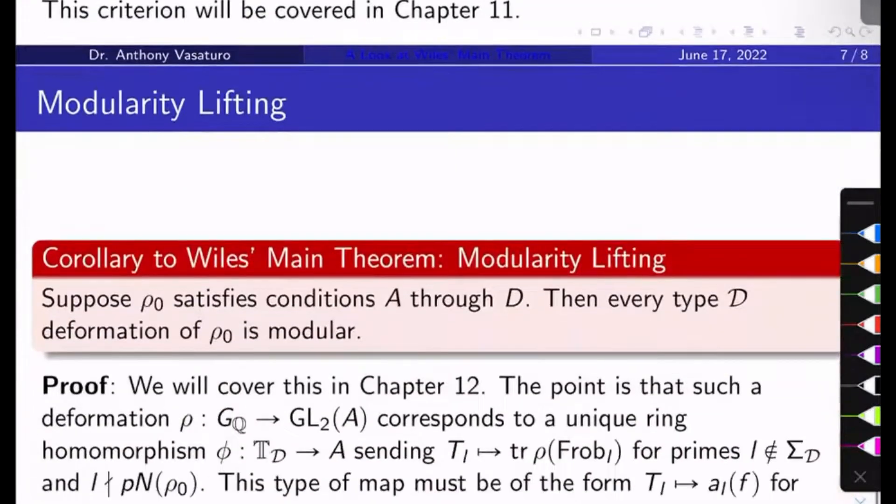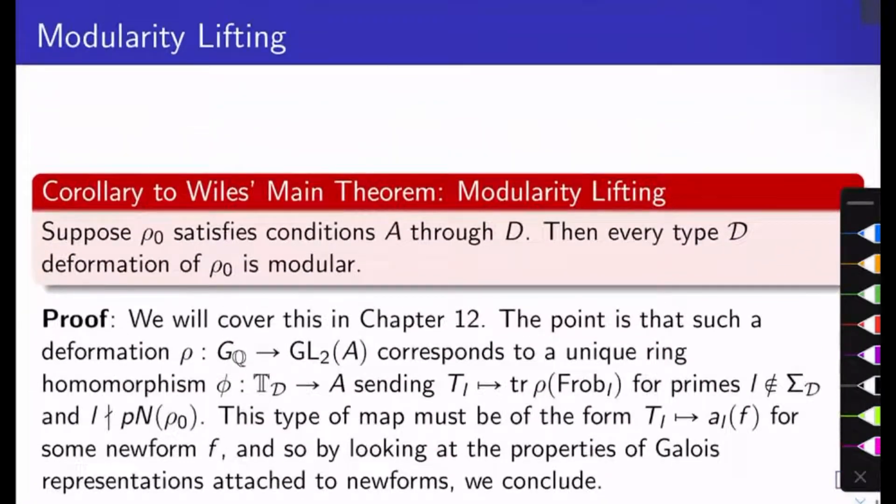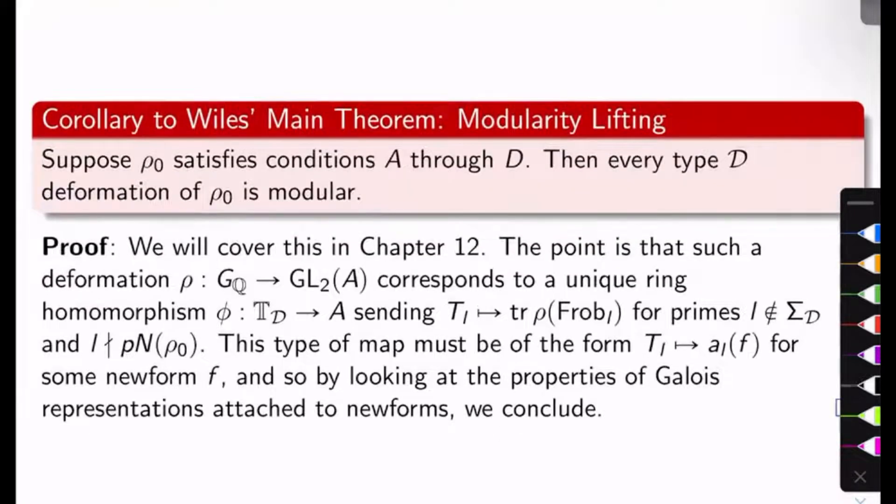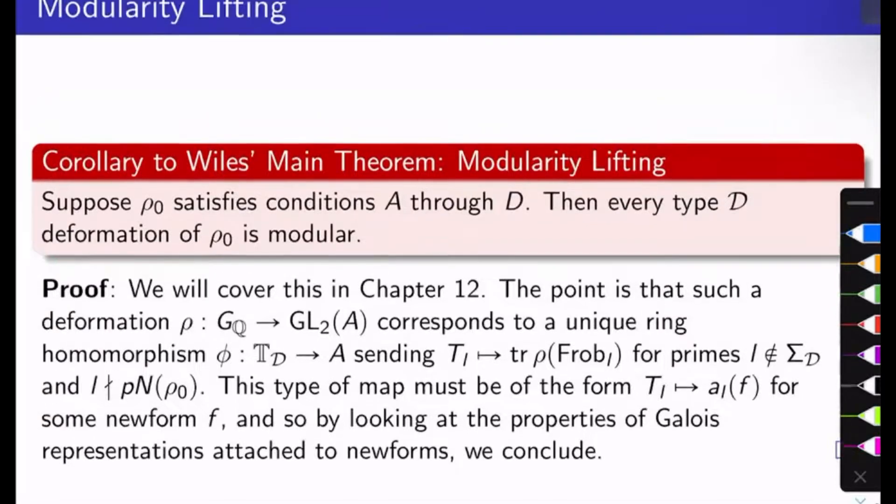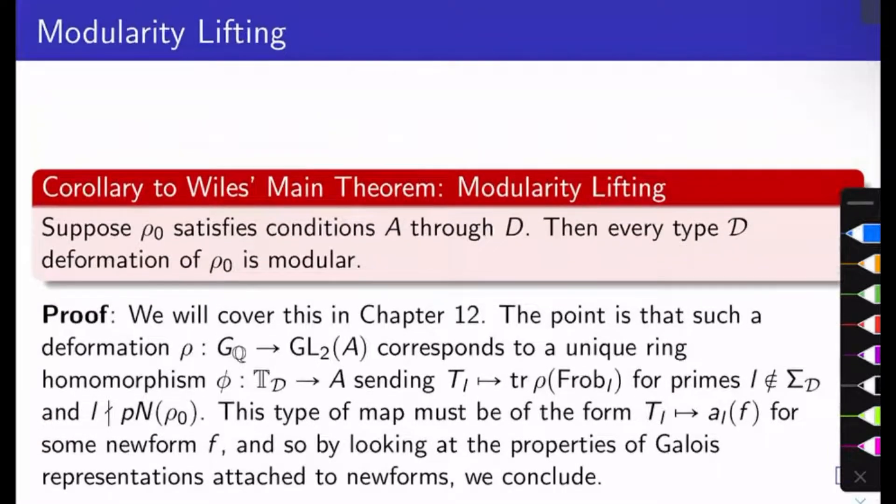A crucial corollary to Wiles' main theorem is the modularity lifting theorem. This is a special case of Mazur's lifting conjecture. Here's what it says: suppose rho-naught satisfies conditions A through D. Then every type D deformation of rho-naught is modular. This is huge.